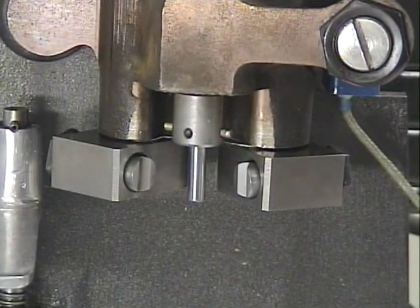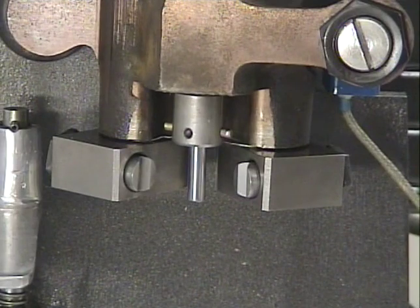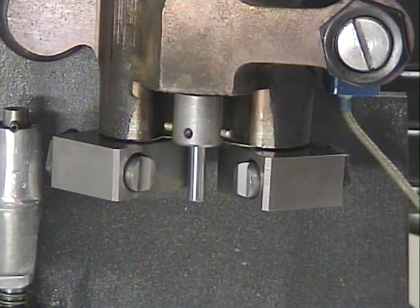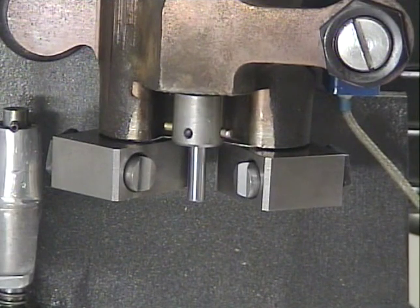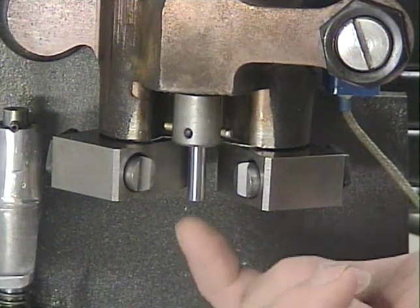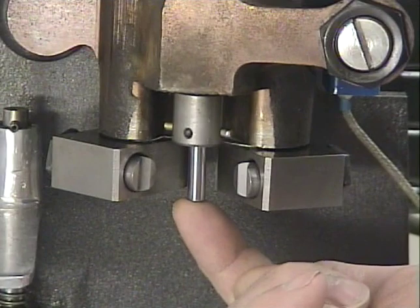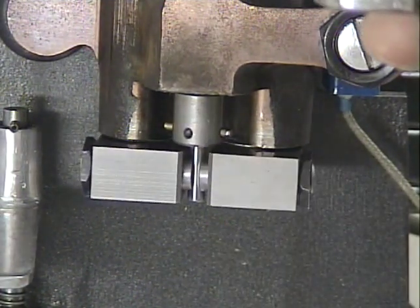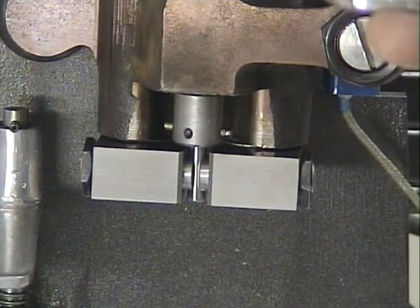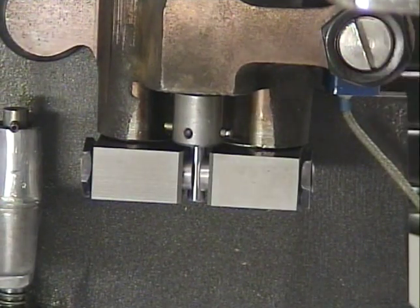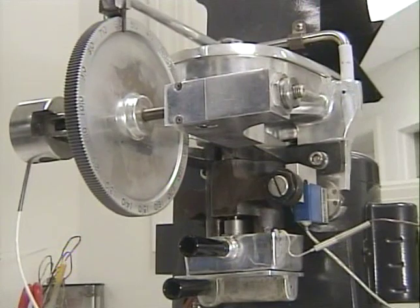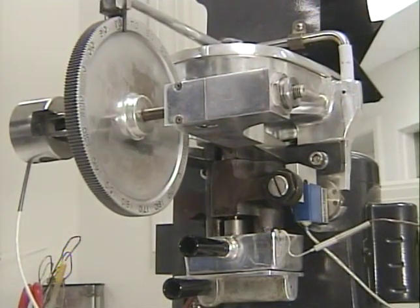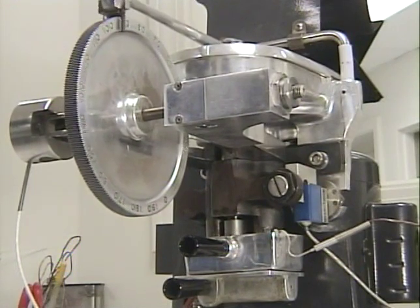The Falex pin and v-block test is a comparative laboratory measurement of a lubricant's ability to maintain a film between two metal surfaces under increasing pressure. During the test, the pin is rotating and the v-blocks on either side are then squeezed against the pin with increasing pressure until seizure of the pin. The gear mechanism applies an increasing load until pin seizure.